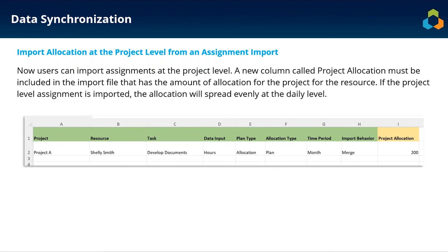On the data synchronization side, the Excel assignment import now supports importing at a project level. Previously you could import at monthly, quarterly, daily, or weekly levels. Now you can specify the project, resource, and task, then provide a single project allocation value. Tempest will take that allocation and equally distribute it throughout the project based on the project's start and end date, rather than requiring the data to be time-phased in the import file.